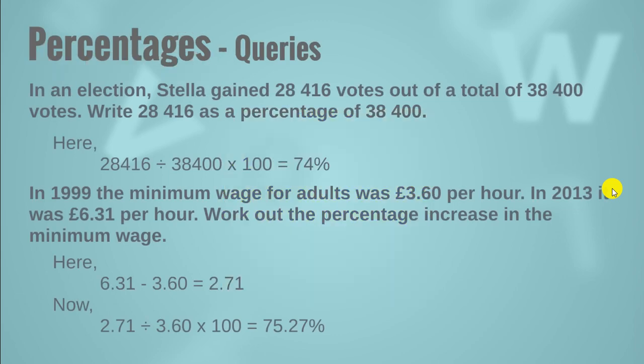Now let's move forward. Here we have a question. In an election, Stella gained 28,416 votes out of a total of 38,400 votes. Write 28,416 as a percentage of 38,400. So you can see that the obtained votes are 28,416 and the total number of votes are 38,400. To find the percentage we need to put it in its formula, with a simple obtained amount divided by total amount multiplied by 100.